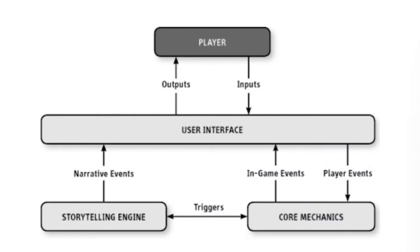First, we go back to our chart here. You have the player and they input through the user interface, which we talked about last time. That triggers some player events, which go back to the core mechanics. We are now in the core mechanics — in the bottom right corner of this chart — looking at how the core mechanics take player events and make in-game events and report that back to the user interface.